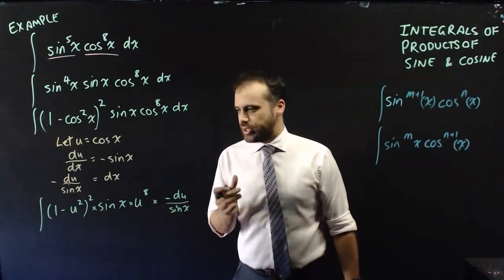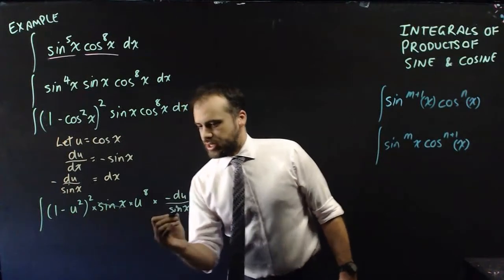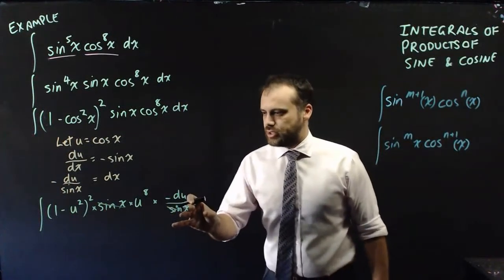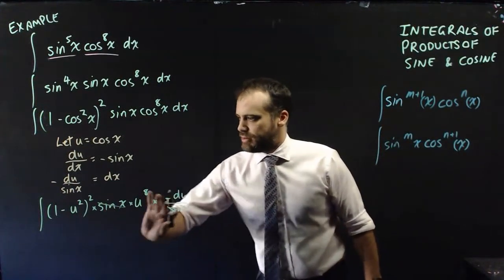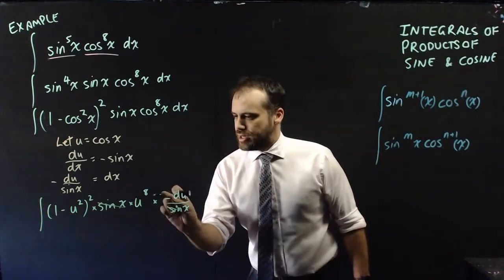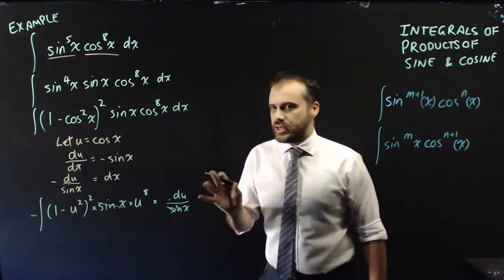So once we've got something that looks a little bit like that, we can see that there's a sine x here and a sine x here, so they'll cancel each other out. And this negative is being multiplied through by the lot, so that negative can be removed from here and moved over to here.